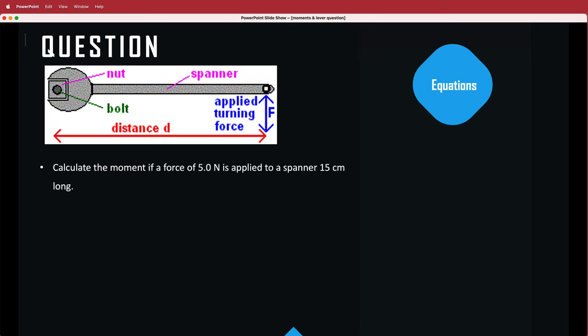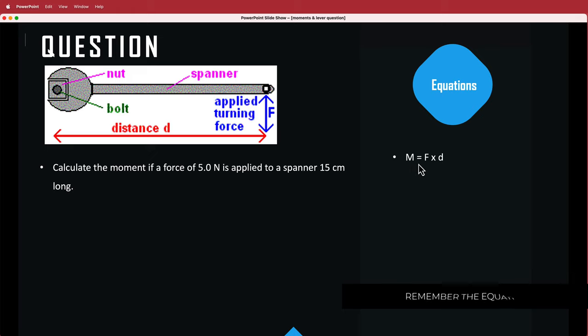So here we have an example. What we have to do here is calculate the moment if a force of 5 newtons is applied to a spanner 15 centimeters long. So we have to calculate this force here. We know our equation is the moment is equal to force times distance.